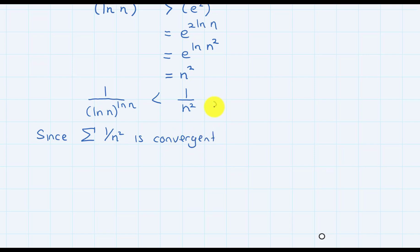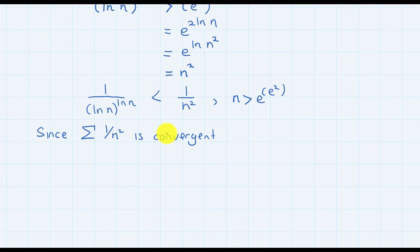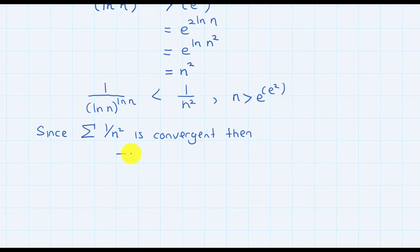To be precise, this inequality is true when n is greater than e to the power of e squared. Since the series 1/n² is convergent, then the series that we would like to know is also convergent: 1 over (ln n)^(ln n) is convergent.